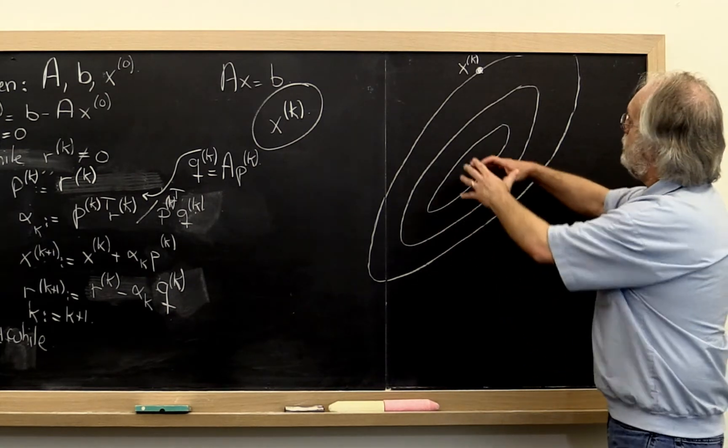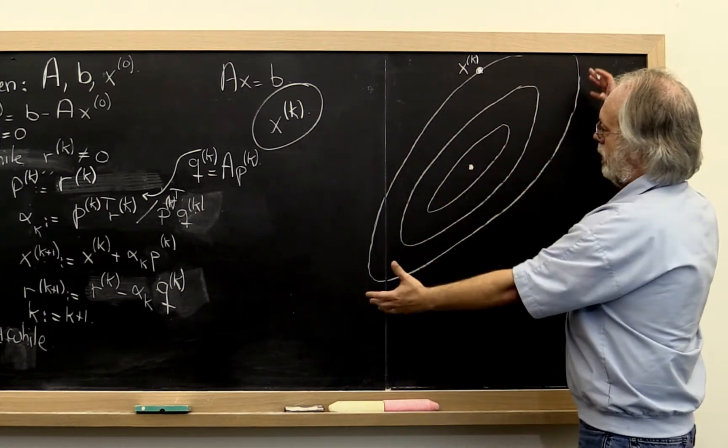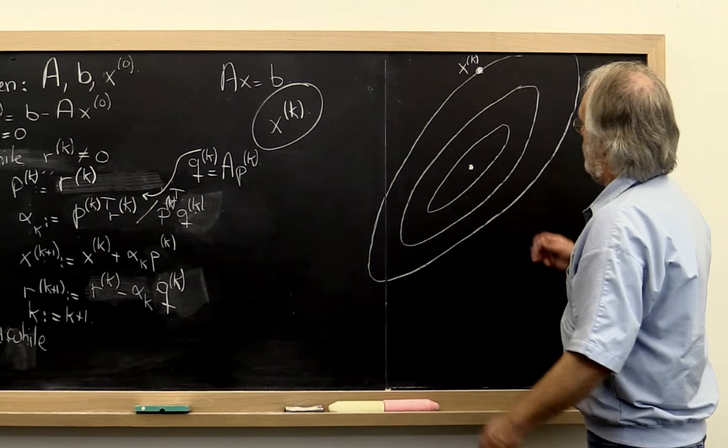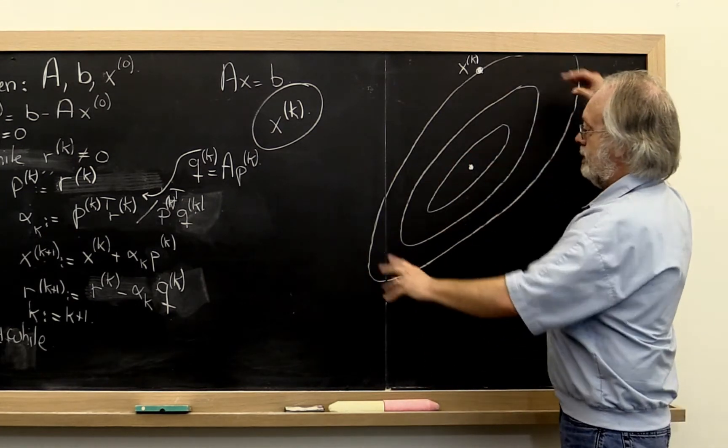What I've done here is I've redrawn the picture that captured the contours. And notice that it's relatively elongated like this.